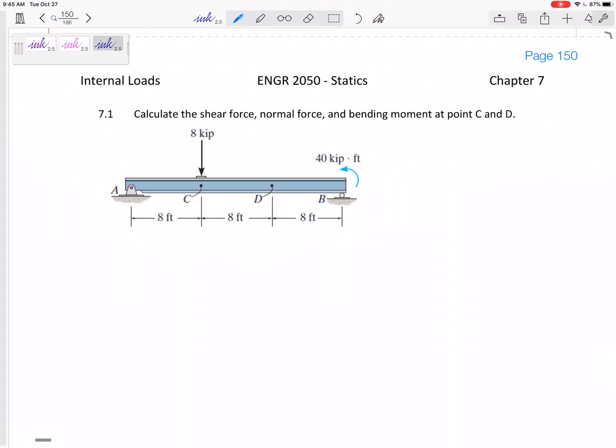Alright, so this one we want to find the internal loads, the internal shear, normal, and bending moment at point C and point D. So it matters where we cut it. This is two separate problems. First we're going to cut it at C, then we're going to cut it at D. Two separate problems.